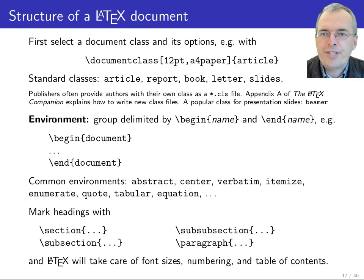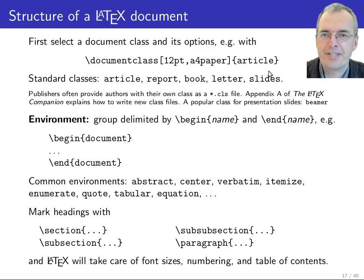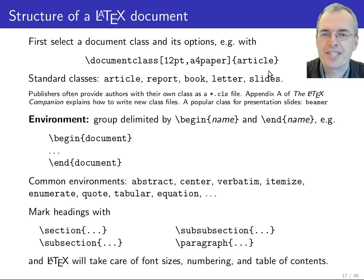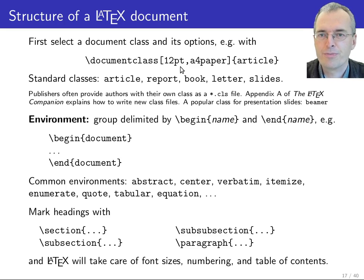The start of a LaTeX document is a document class command where you specify what class of document you want to create — for example, an article. You can specify a couple of options. The two most commonly used options are a default font size for the entire document: 12 point or 11 point is usually more appropriate for an A4 sized document, because the 10 point default font size is more suitable for smaller page sizes like those used in book printing.